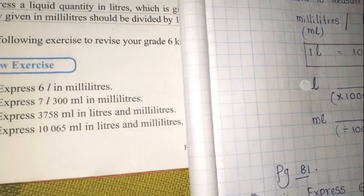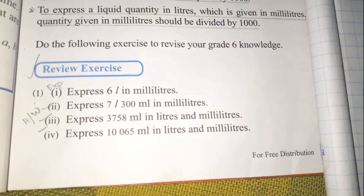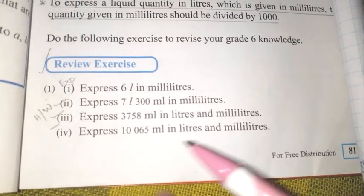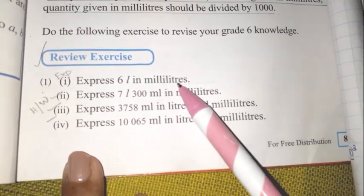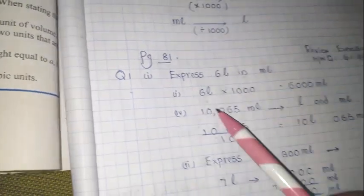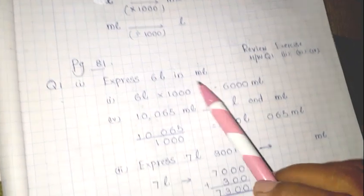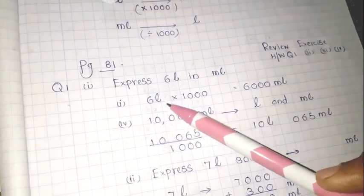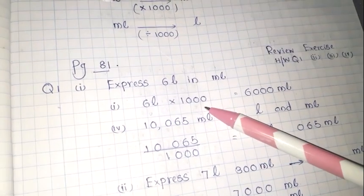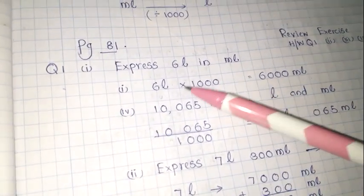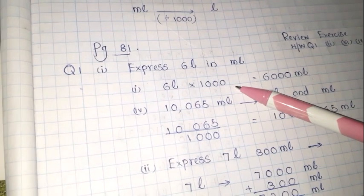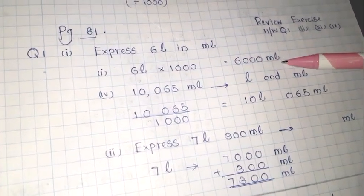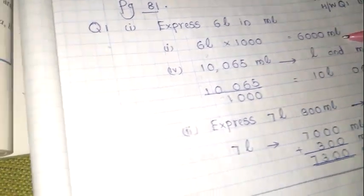Page 81, question number 1: Express 6 litres in millilitres. You know 1 litre has 1000 millilitres, so 6 multiplied by 1000. Why do you multiply by 1000? Because you are converting litres into millilitres. The answer is 6000 millilitres.